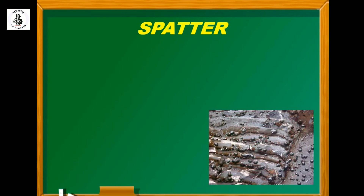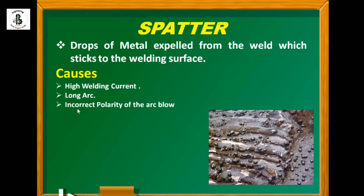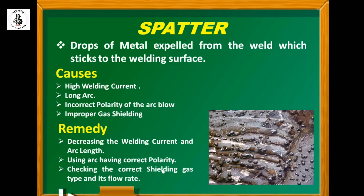Next is spatter. You can see droplets on the surface of the workpiece — drops of metal expelled from the weld which strike the welding surfaces. The causes include high welding currents, inability to control speed, long arc, and incorrect polarity. For direct current, there is straight polarity and reverse polarity, selected as per joint requirements. Improper gas shielding also causes spatter. Remedies include decreasing welding current and arc length, using correct polarity, and checking shielding gas type and flow rate.